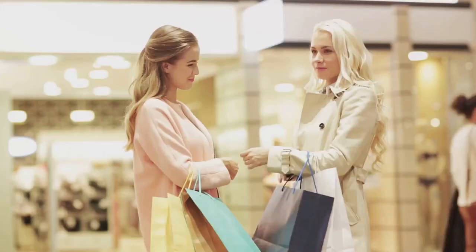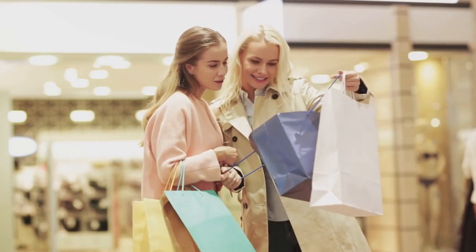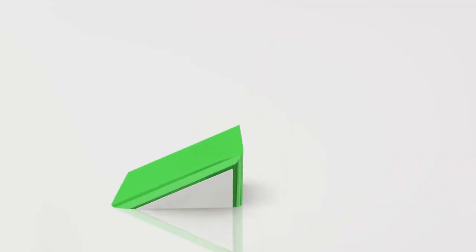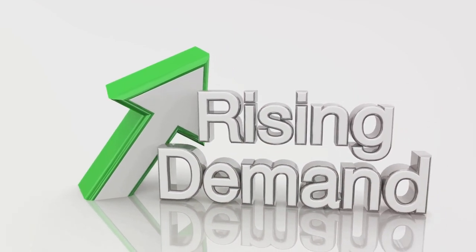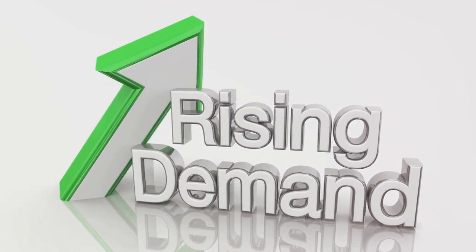One key factor is income. If people's incomes increase, they may buy more of a product even if its price hasn't changed. That shifts the demand curve to the right. Conversely, if incomes decrease, people might buy less, shifting the demand curve to the left.